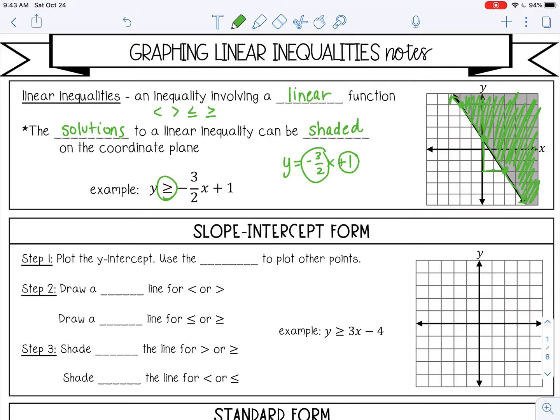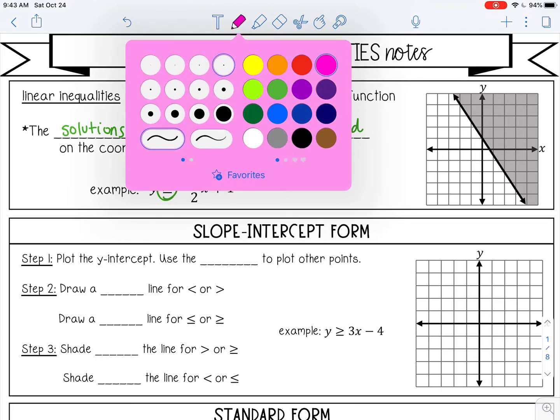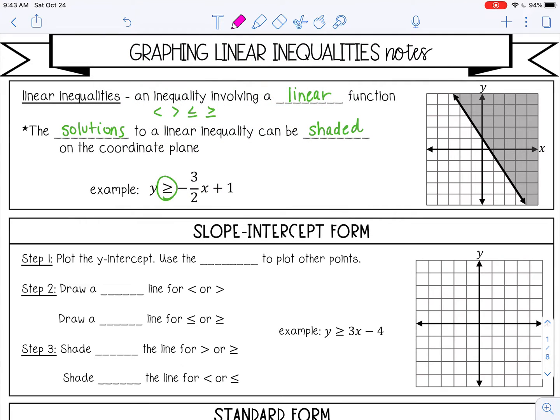are solutions to this inequality. This means if I pick a point in this shaded region and substitute it into this inequality, the inequality will be true. Let's prove it. I'll pick the point (3, 2).